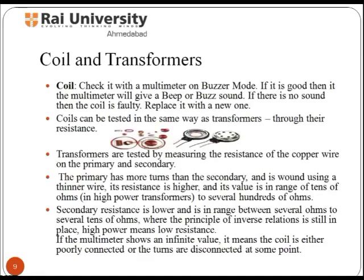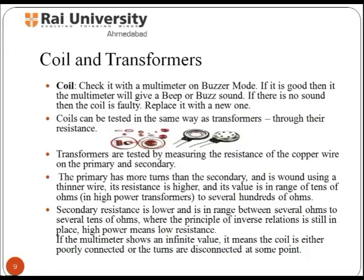In your cell phone charger, there is a transformer which consists of two coils of wire. One coil always has electricity running through it when plugged in, and the other coil, which is plugged into your phone, allows electricity through it by inductance, since the coils are not directly connected. To test a coil, check it with a multimeter in buzzer mode; if it is good, the multimeter will give a beep or buzz sound, and if there is no sound, the coil is faulty. For transformers, measure the resistance of the copper wire on the primary and secondary. If the multimeter shows infinite resistance, it means the coil is either poorly connected or turns are disconnected at some point.